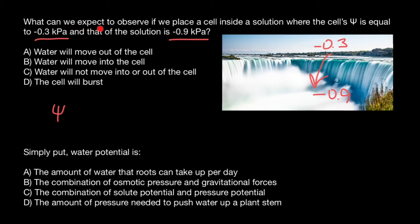What can we expect to observe if we place a cell inside a solution where the cell's water potential is -0.3 and that of the solution is -0.9 kilopascals? Of course, in this case, water is going to move from high water potential to lower water potential, which means from the cell to the